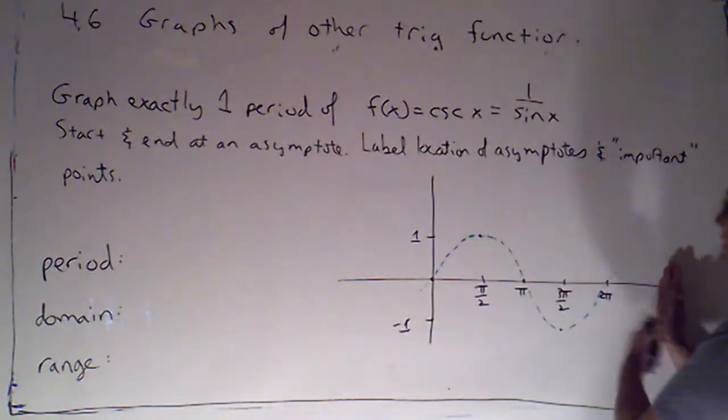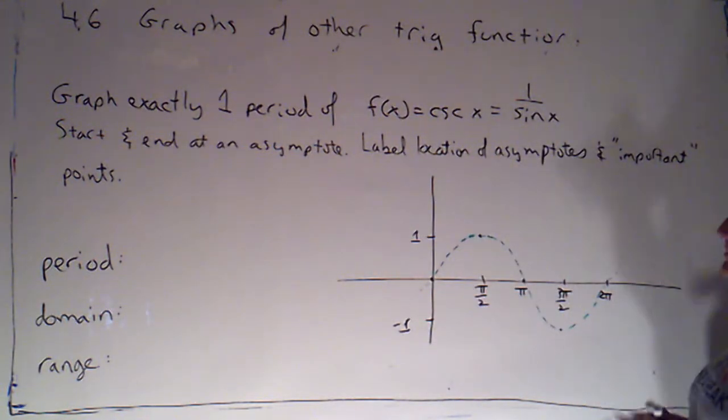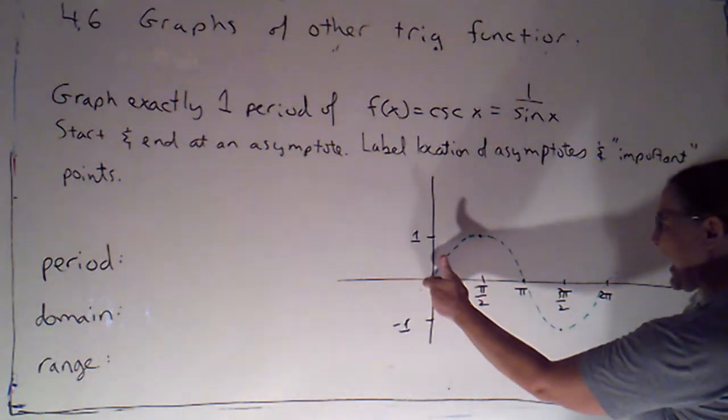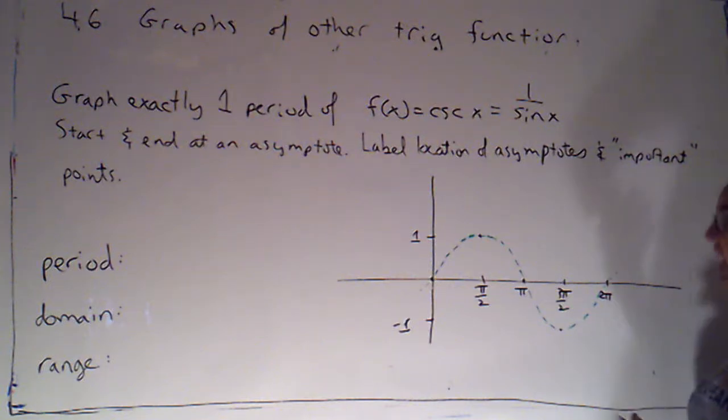I've started the problem here by just drawing one period of sine as a dotted curve. Now sine is kind of nice because it's zero at the beginning and the end of this period that goes from zero to two pi.